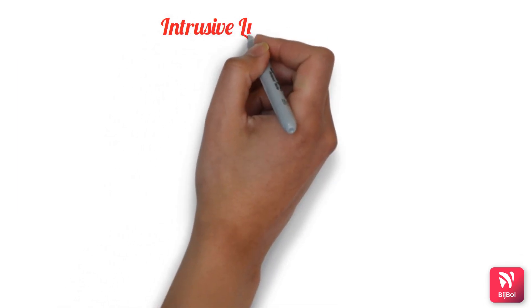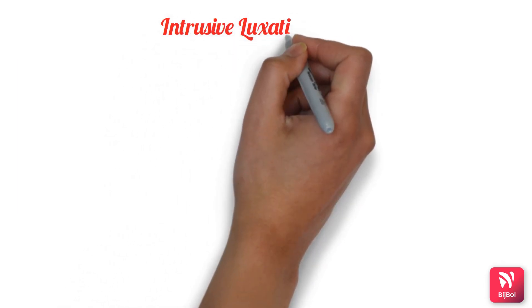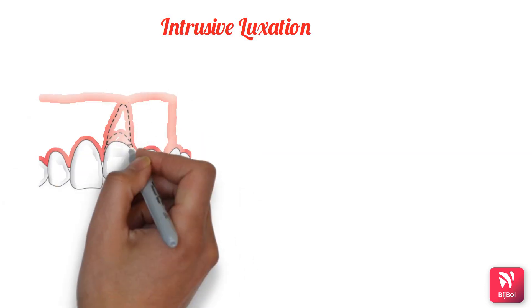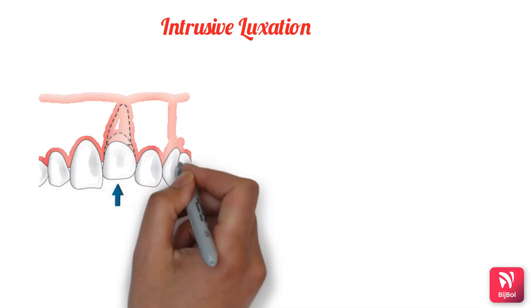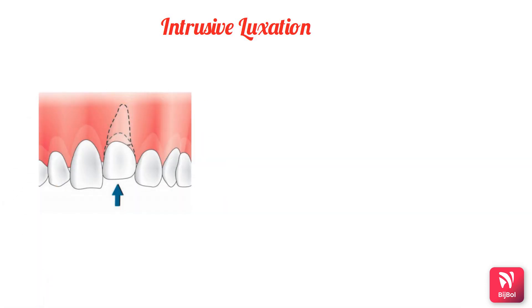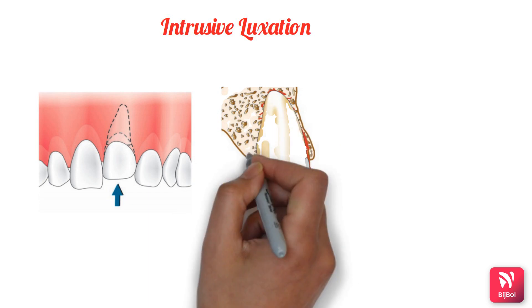In intrusive luxation, the tooth is forced into the socket in an apical direction, resulting in maximum damage to the pulp and supporting structures.